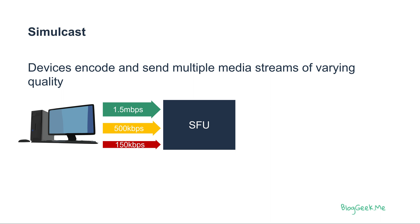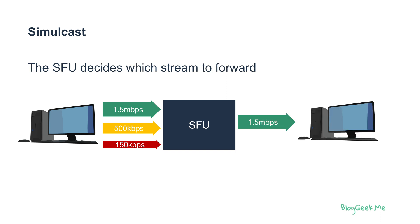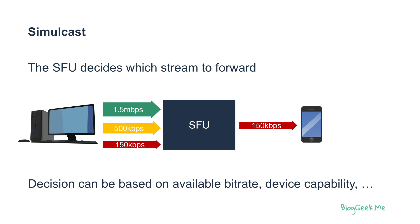The SFU, our media server, will then decide what to send to each of the other participants. It can send the highest bitrate — in our example here, 1.5 megabit per second — so the best stream quality that it has, or it can decide to send something else, like the lowest quality in this case.